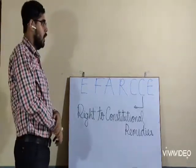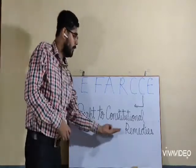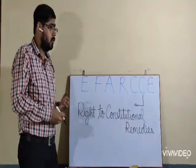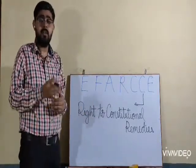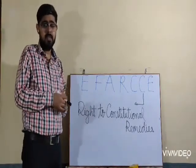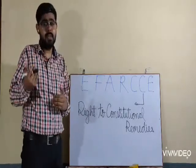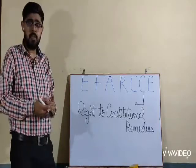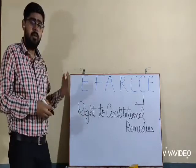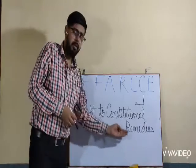The first C of FRC stands for cultural and educational rights. The second C stands for right to constitutional remedies. This means wherever changes in the Constitution are needed, they are done by Parliament. Members of Parliament who feel changes or remedies should be made to the Constitution use this right to constitutional remedies.